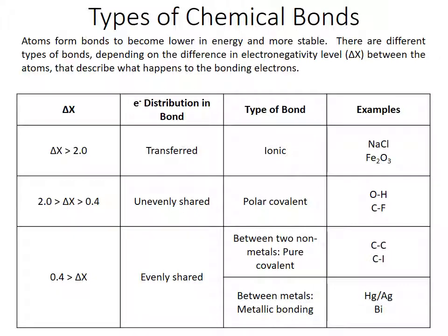We've learned about several different types of bonds in this class, so we're going to review them and learn how we can tell the difference between them. Atoms form bonds to become lower in energy and more stable, because they want to feel like they have a full octet, like a noble gas.